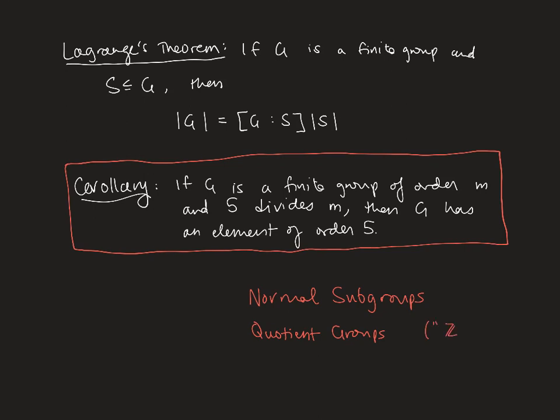So in the back of your mind, think about our groups Z mod n, where we divide stuff by n and we take remainders. Those are a nice example of additive or abelian quotient groups. So that's what we'll be talking about next time.